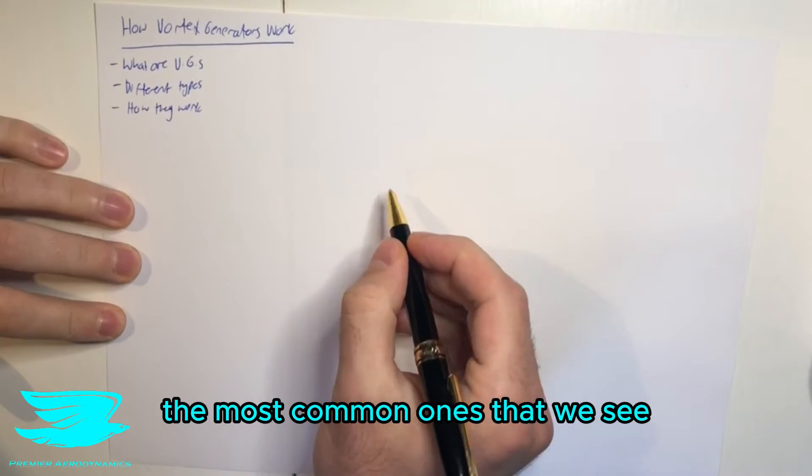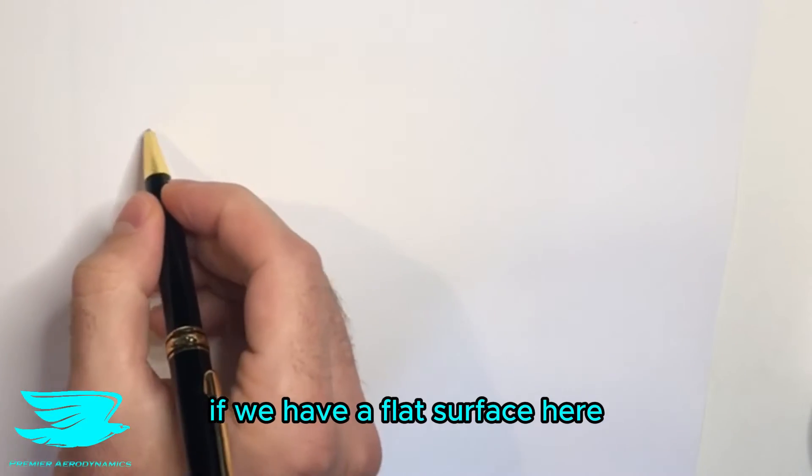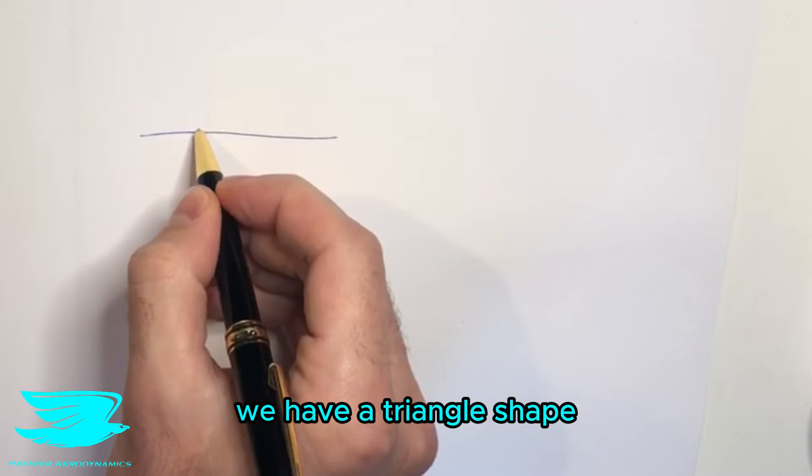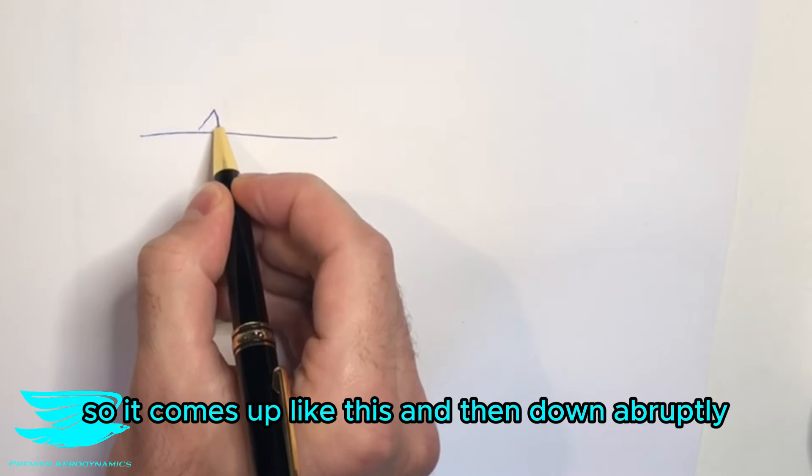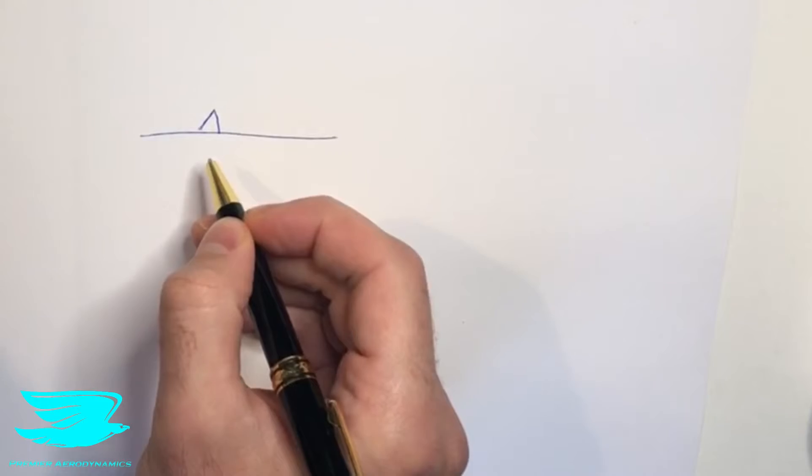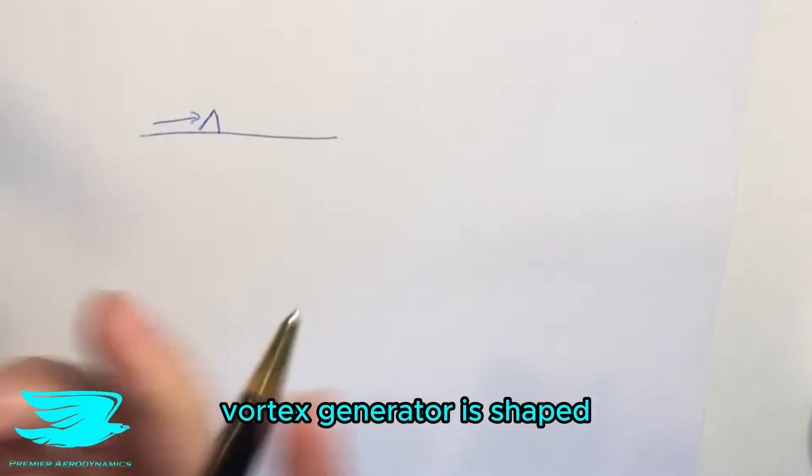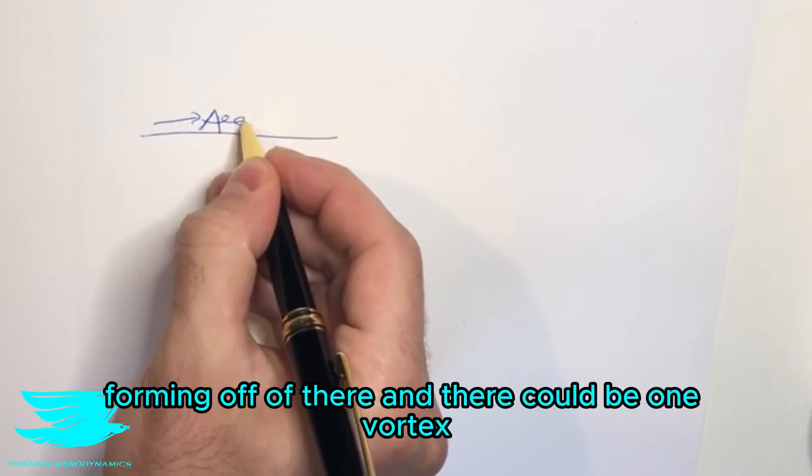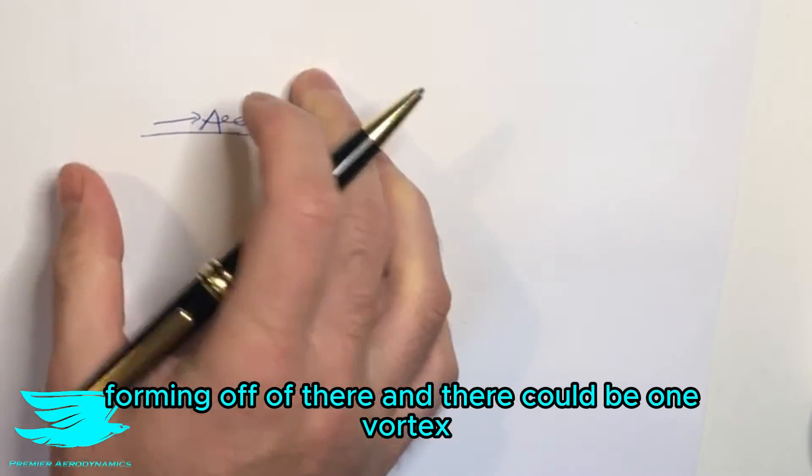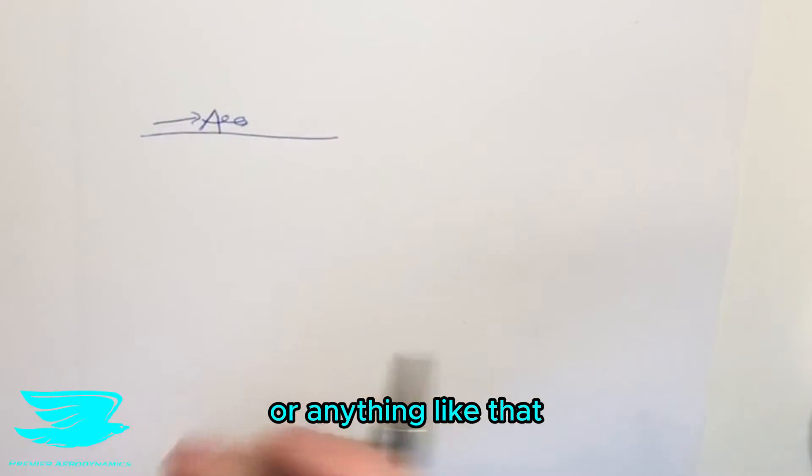So typically speaking, the most common ones that we see, if we have a flat surface here, we have a triangle shape. So it comes up like this, and then down abruptly. So the flow comes over it, and depending on how the vortex generator is shaped, you have vortices forming off of there, and there could be one vortex, two vortices coming off of there, or anything like that.